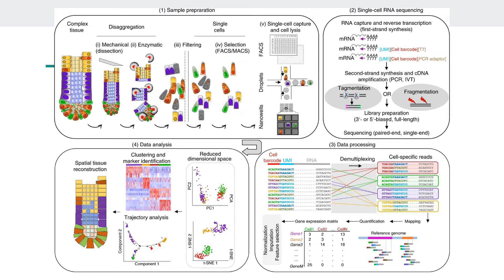Let's get started. This is the single-cell technology workflow. The first step is to prepare your sample — dissociate the tissue into different cells, then capture the cells. In the next stage, we prepare the RNA: we attach the cell barcode and the UMI. Once our samples are prepared, we go for sequencing. After sequencing, we process the raw data — cell demultiplexing, followed by UMI deduplication, then aligning the reads against the reference genome, then quantification. Finally, we get a count matrix where each column represents a cell, each row represents a gene, and the count represents the number of UMIs supporting that gene in that cell.